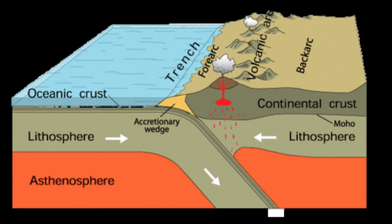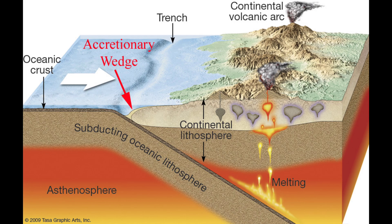Plate tectonic theory recognizes that the surface of the Earth is broken up into a few dozen rigid plates that are all moving relative to one another by sliding along a partially molten zone deep within the mantle. These plates can have one of three types of boundaries with each other, including divergent, convergent, and transform.